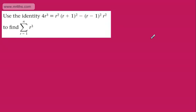In this question, it says: use the identity 4r³ ≡ r²(r+1)² − (r−1)²r² to find the sum from r equals 1 to N of r cubed. You might recognise this from FP1.